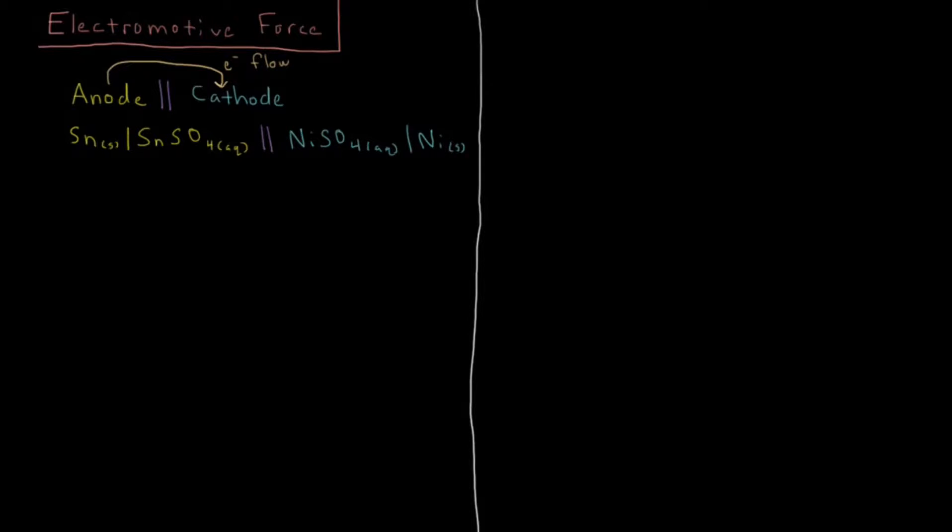We want to now ask the question: what is the criteria for making the electron flow in an electrochemical cell spontaneous in the direction that we've written it, from anode to cathode?